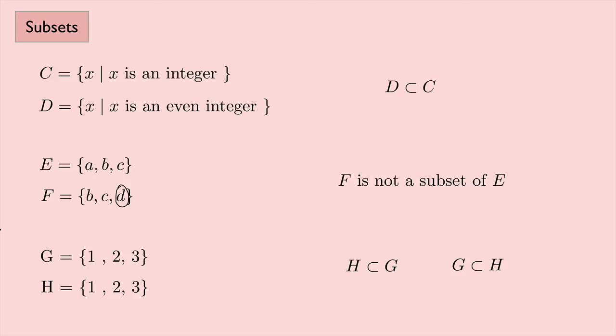So when the sets are subsets of each other, it looks like the sets are equal. And that actually turns out to be true. So for equal sets, two sets A and B are equal if A is a subset of B and B is a subset of A.